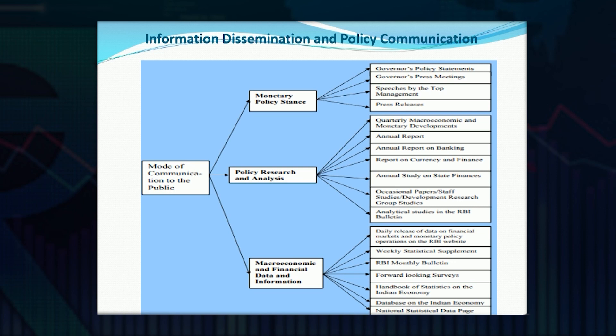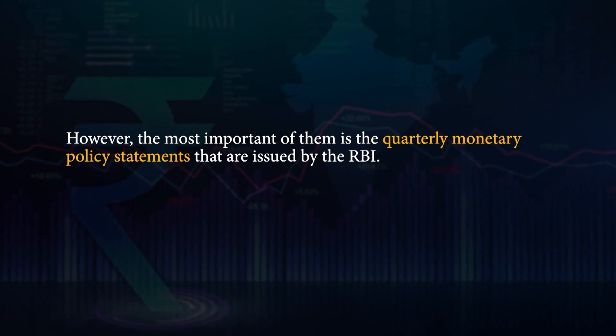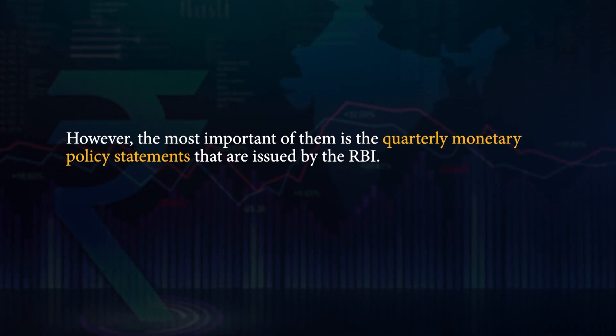The macroeconomic and financial data and information is disseminated by the daily release of data on financial markets and monetary policy operations on the RBI website. We have the weekly statistical supplements, the RBI monthly bulletin, the forward-looking surveys, the handbook of statistics on the Indian economy published by the RBI, the database on the Indian economy published on the RBI website, and of course, the national statistical data page. The stance of monetary policy and the rationale are communicated to the public in these variety of ways.